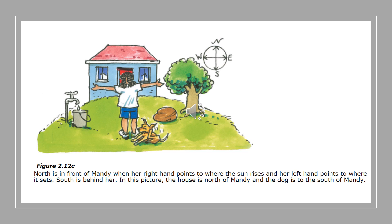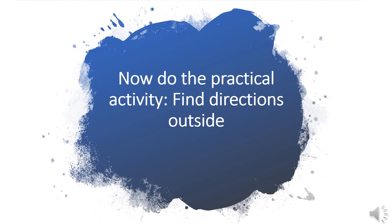All maps that you get will indicate or show you where north is. Now that we know about the four different compass points showing us direction, we can go outside and complete the activity.